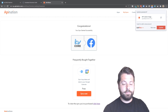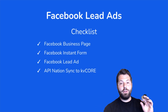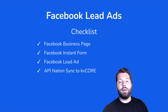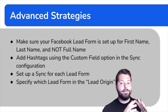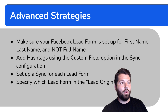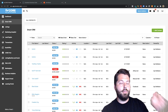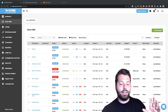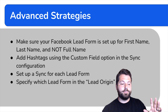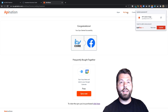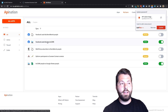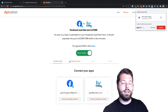You'll open KV Core and see all the new leads coming from that Facebook lead ad. Now let's talk about a few advanced strategies realtors have shared. Number one: when you create the lead form, set it up for first name and last name — not full name. There is no 'full name' field in KV Core; if a full name comes over, it will jam everything into the first name or last name field.